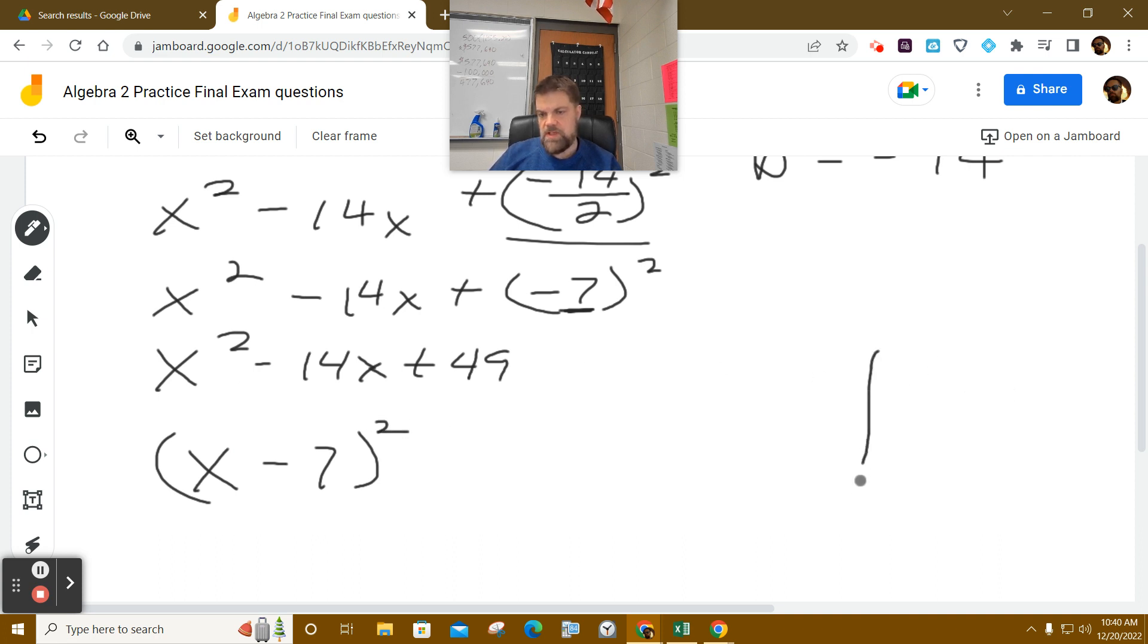I'll prove that to you over here on the side. So what I'm saying is that if I take the quantity x minus 7 and multiply it by x minus 7, I get x times x, which is x squared. Negative 7 times x is negative 7x. Remember, we're multiplying the row by the column. x times negative 7 is negative 7x, and then negative 7 times negative 7 is a positive 49.